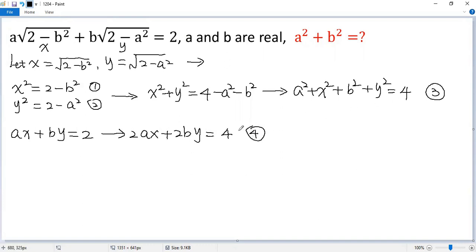Now 3 minus 4. Let's look at the left side. So we get a squared minus 2ax plus x squared, and then b squared minus 2by plus y squared. The right side, 4 minus 4 is 0.